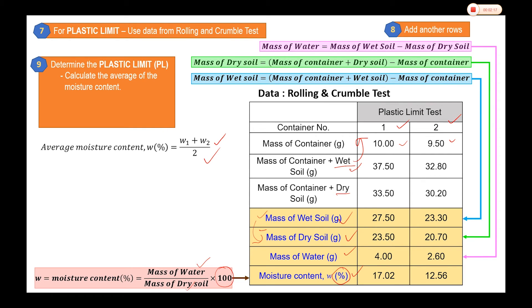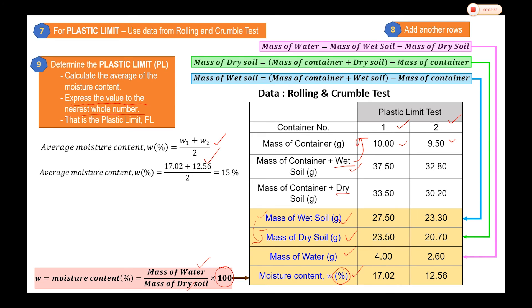Once you calculate the average value, you express it to the nearest whole number. In this example, the plastic limit is 15 percent. That is how we determine the plastic limit.